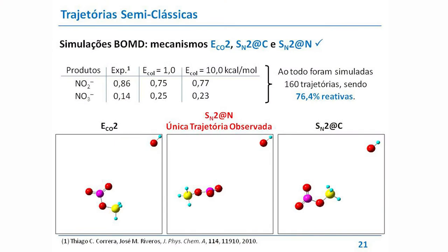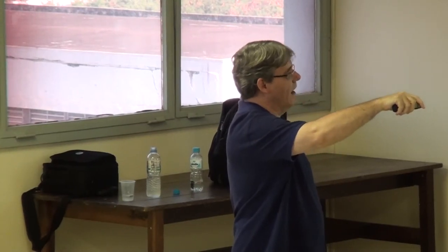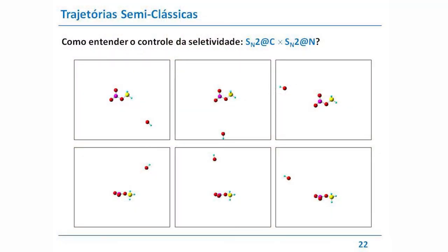Aqui tem alguns exemplos dessas trajetórias. A gente começa a uma distância razoavelmente grande, dá uma certa energia — pode ser 1 kcal — só para direcionar a hidroxila na direção do substrato. Aqui temos uma reação de eliminação em que ela vai abstrair o próton — não abstraiu na primeira, ela volta, vai abstrair o próton, formou a água e ocorreu a dissociação: formou nitrito, aldeído e a água. A trajetória do lado direito é uma reação de SN2 sobre o carbono: ocorreu a substituição, formou o metanol e o nitrato.